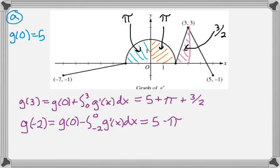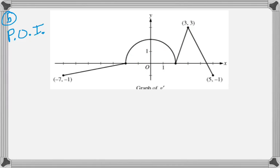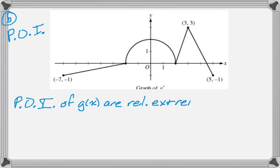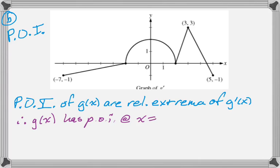We can kind of breeze through part a. Part b, we're looking for points of inflection. We know that the points of inflection of g(x) show themselves on g prime as relative extrema — let's jot that down because that will be our reasoning. So the points of inflection of g(x) are relative extrema of g prime. g(x) has a point of inflection at x = 0 and x = 2. Remember, g prime doesn't need to be differentiable at these points, it just needs to have a relative extremum.